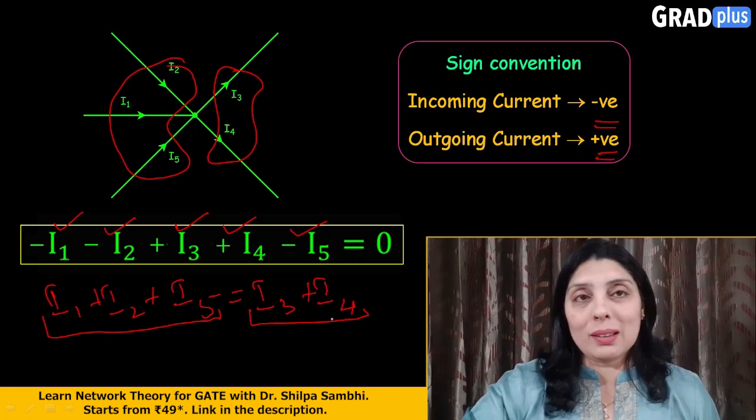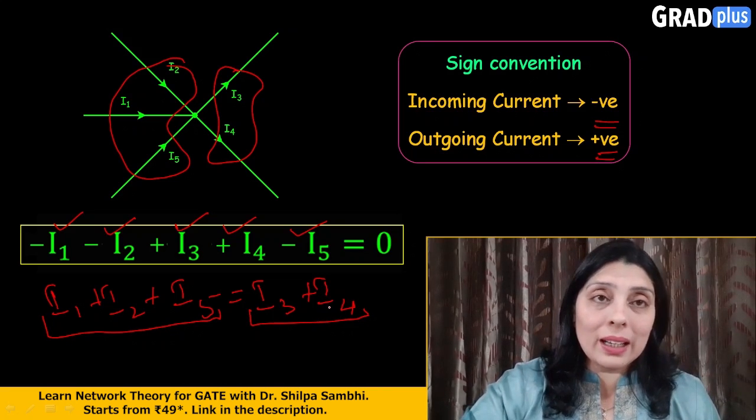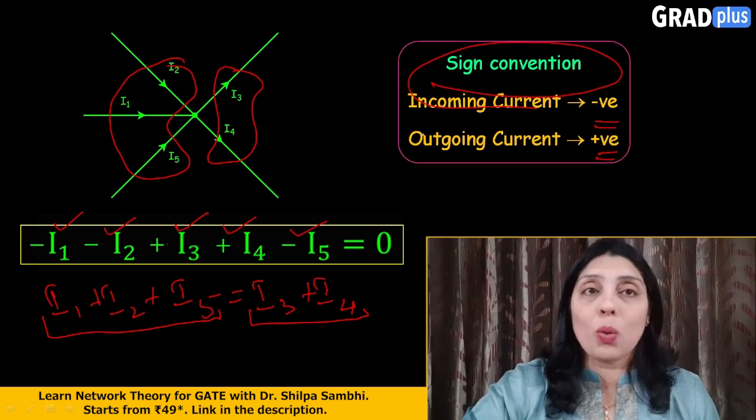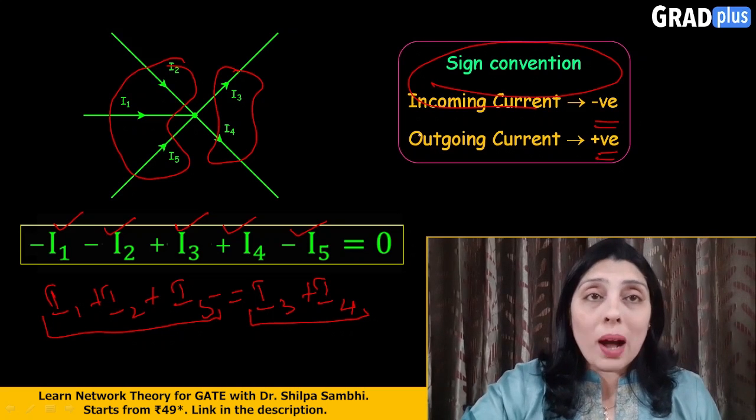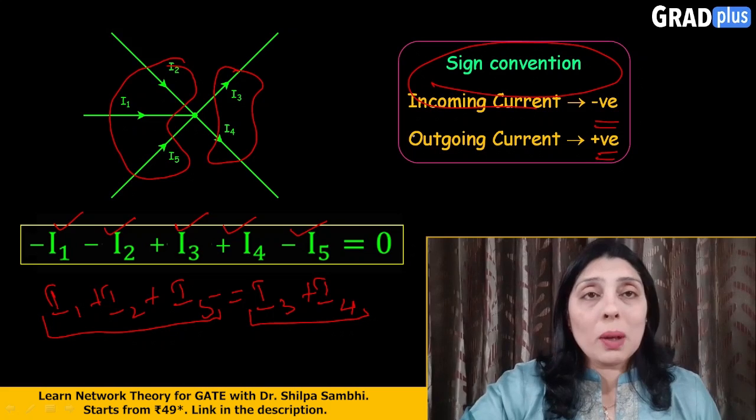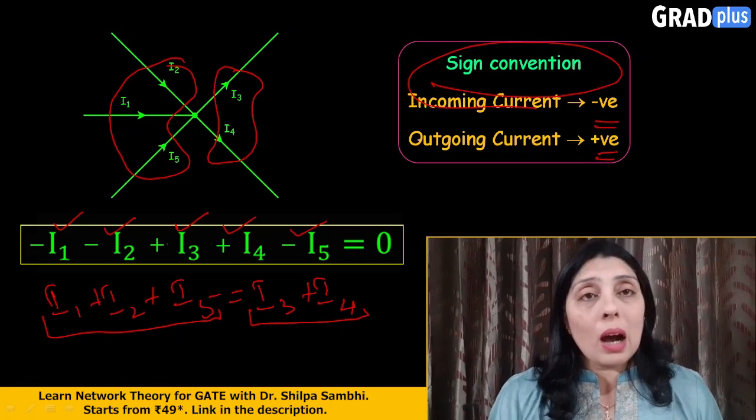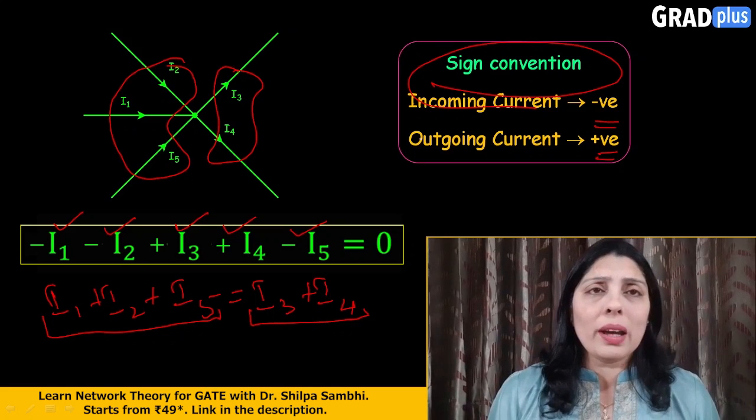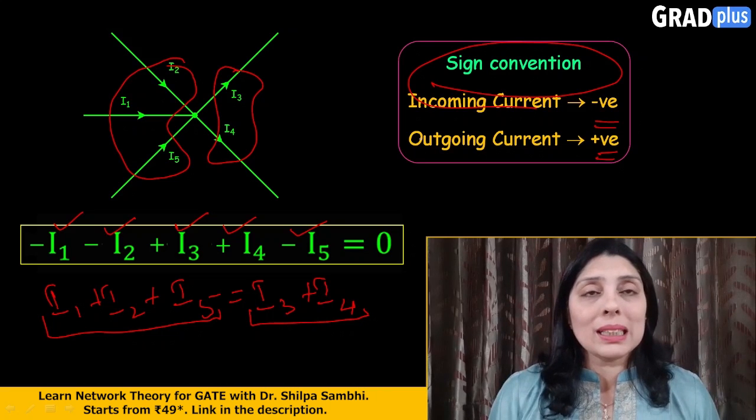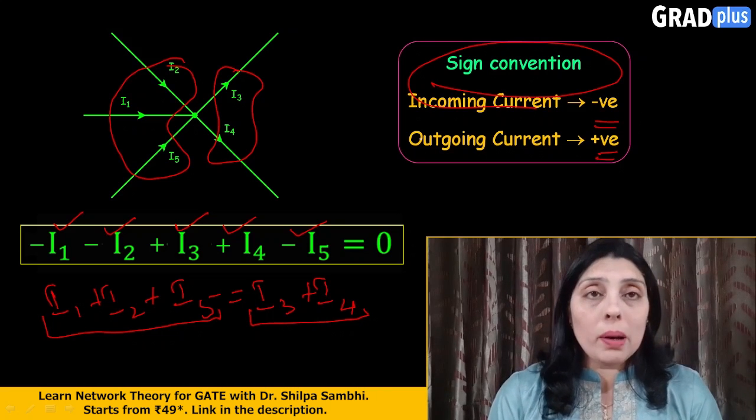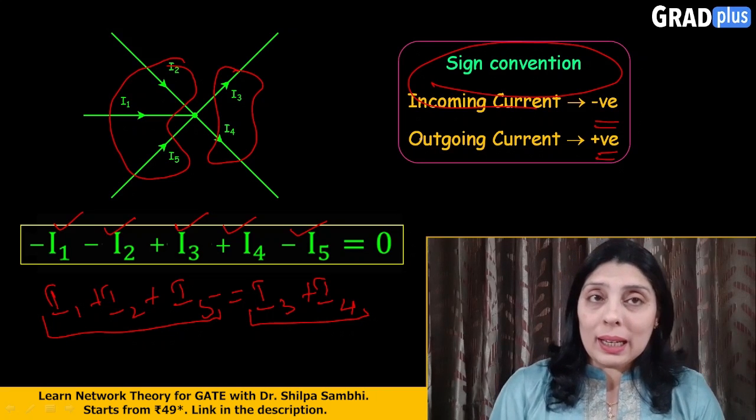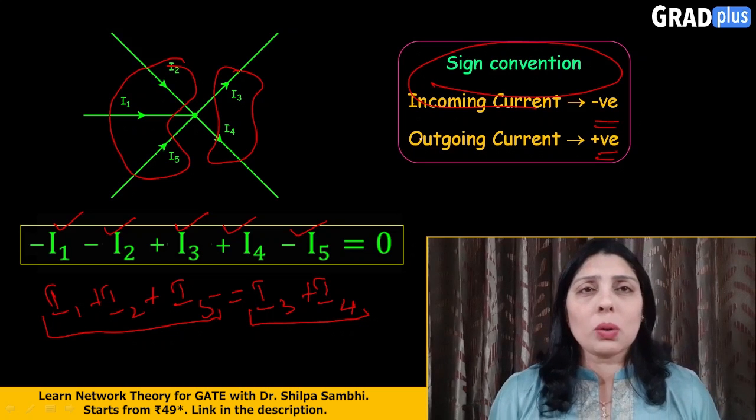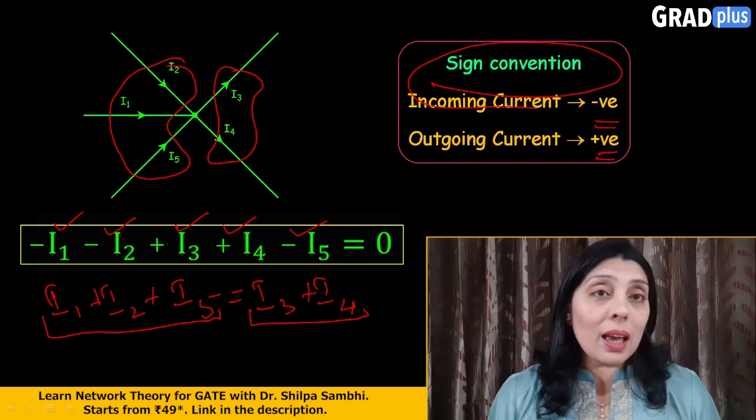So please understand here one important point and that is your sign convention should be same throughout the working of your circuit. Why? Because if you're going to apply then only your incoming and outgoing directions will be taken care of by the positive and the negative signs. How you're going to define your direction of current, with the help of these mathematical signs. Okay, but remember while you do practice for the nodal analysis, do remember to take same sign convention for whatever practice questions you people are doing.